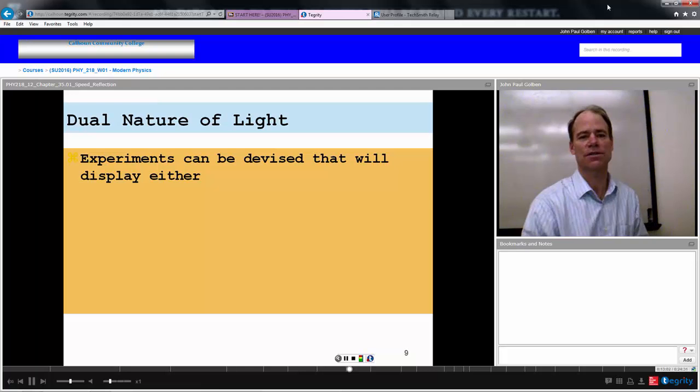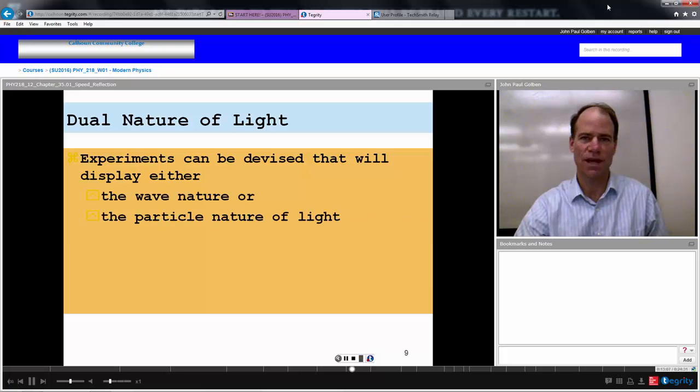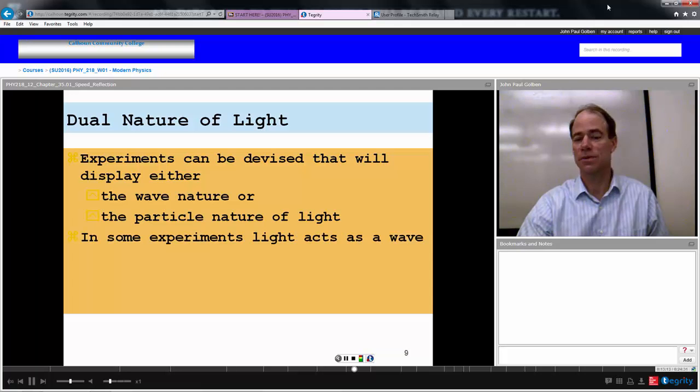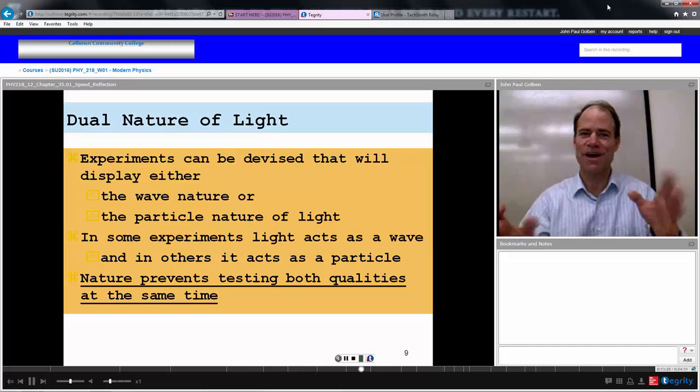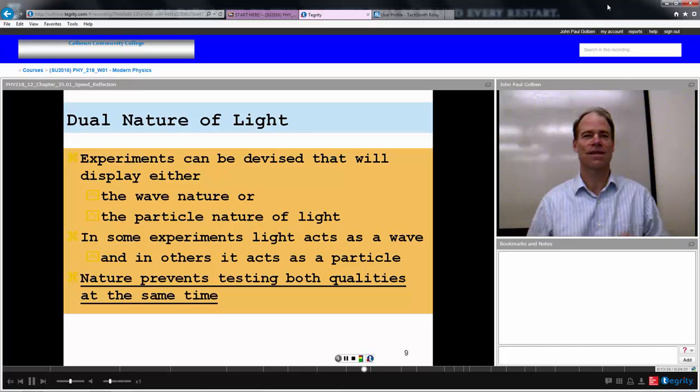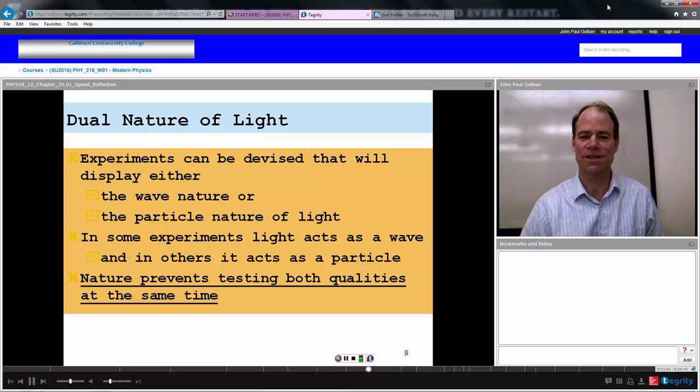The light does have a dual nature, and experiments can be devised that would display either the wave nature of light or the particle nature of light. Some experiments, light acts like a wave, and in others, it acts like a particle. If you devise your experiment to look for light as a wave, you will find it as a wave. If you devise your experiment to look for light as a particle, you will find it as a particle. Nature prevents testing both qualities at the same time. You can't find a wave and particle nature at the same time. It depends on what you're looking for, and you can only look for one at one time. So, whatever you're looking for with light, you're going to find it.